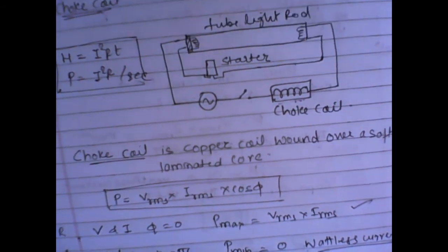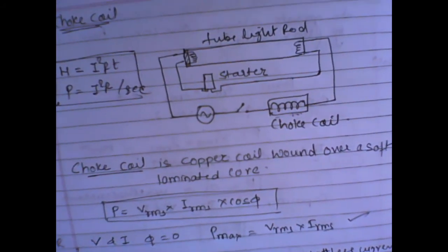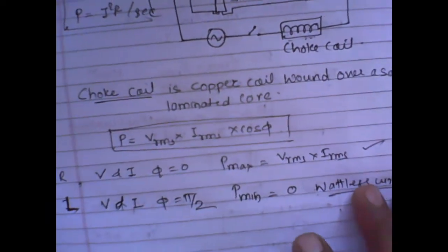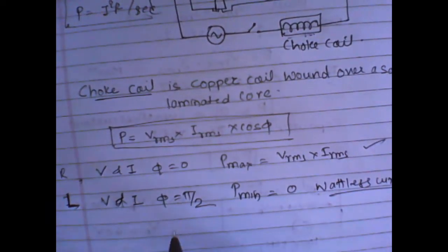There is no power loss if we use an inductor coil. Thus, this inductor coil which is used to reduce the current in an AC circuit is called a choke coil.